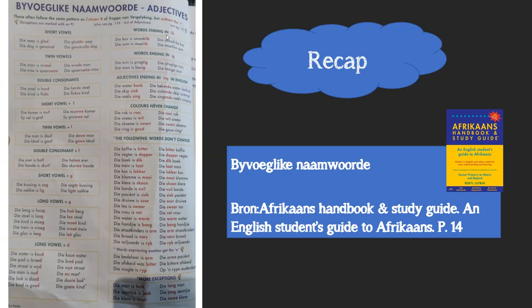Words ending on '-lik': if I've got a word like 'smakelik' or 'moeilik', it ends on the '-lik' sound, and then it only gets an e at the back. 'Die smakelike kos', 'die moeilike som'. Words ending on '-ig': 'die tuin is pragtig' — i-g. 'Besig' — i-g. It only gets an e.